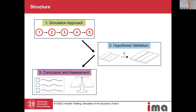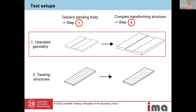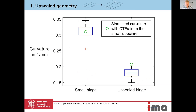We have two test setups: the first is an upscale geometry, and the second is twisted structures. In the first setup, we used the bending hinge introduced earlier as the simple bending body and upscaled it by a factor of 1.5 to get the simulated structure. The result shows the curvature plotted for both structures. The box plot shows the printed results and the green circle is the simulated curvature.